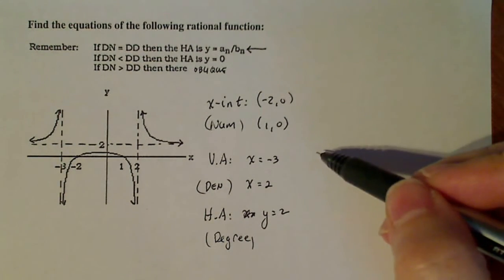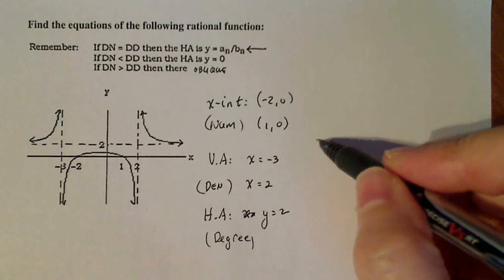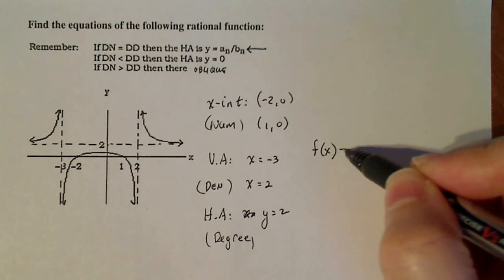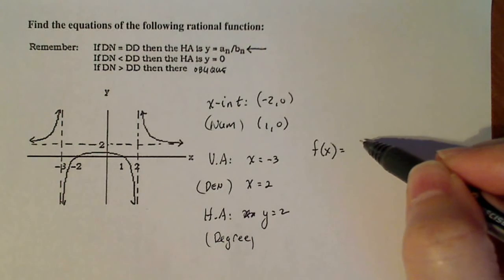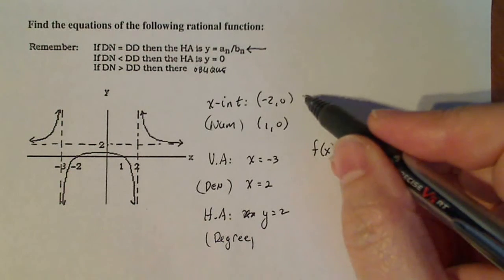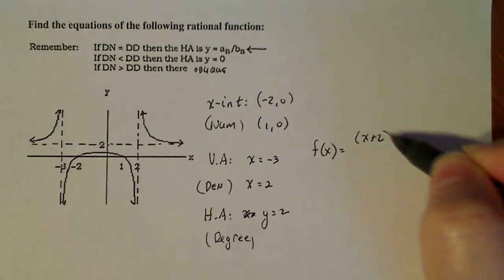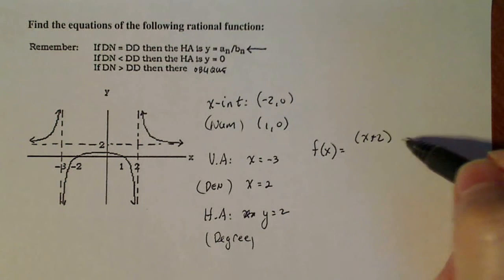When I go over here then to create my equation, I say f of x is equal to—now in my numerator, I know a factor is going to be x plus two, because negative two will make that zero.